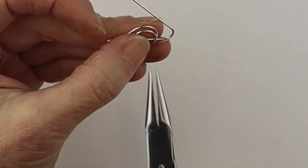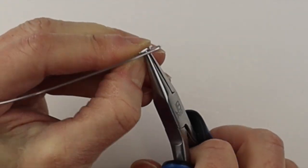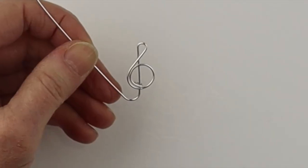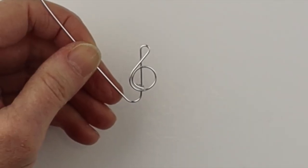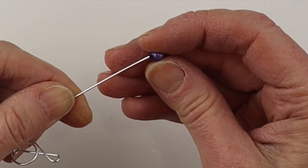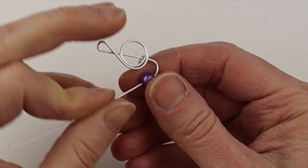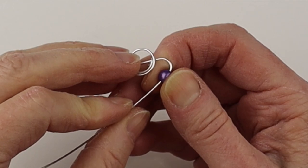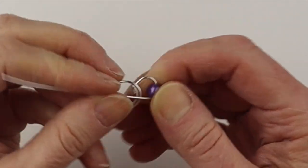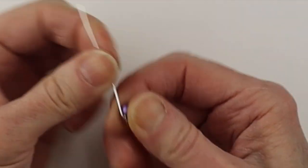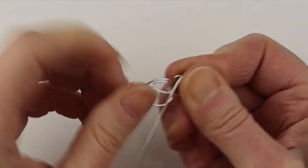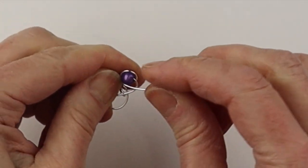From there we'll get our flat pliers to pinch it in place. Just give it a little pinch and then we're going to add a bead. So we'll take a six millimeter miracle bead, hold it in place, and then we're going to wind the wire around the bead to the front and then to the back.